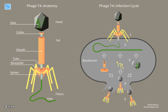Bacteriophages are among the most common and diverse entities in the biosphere. They are ubiquitous viruses, found wherever bacteria exist. It is estimated there are more than 10^31 bacteriophages on the planet — more than every other organism on Earth, including bacteria, combined.